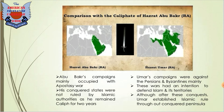In comparison to his reign, Umar's caliphate was mainly against the Persians and the Byzantine Empire, and the main intention was to defend Islam and its territories. Although after these conquests, Umar established a pure Islamic rule throughout the conquered peninsula. The map shows that Umar conquered all over the Byzantine and Persian side, while Abu Bakr could not reach into these empires.